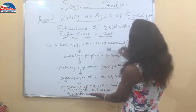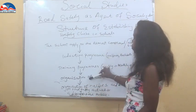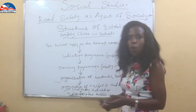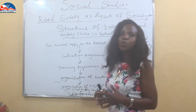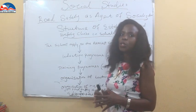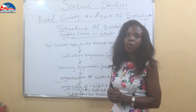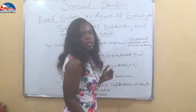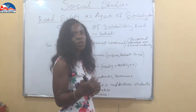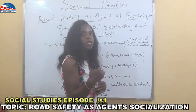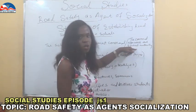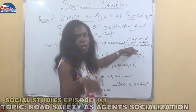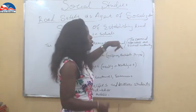I have listed the process in steps one through six. The first step is that the school applies to the nearest command expressing that they want to establish a road safety club. The command then gives approval and comes to the school to establish the club. Alternatively, if the school has not approached them, the command may approach the school authority to inform them of their intention to establish a road safety club.